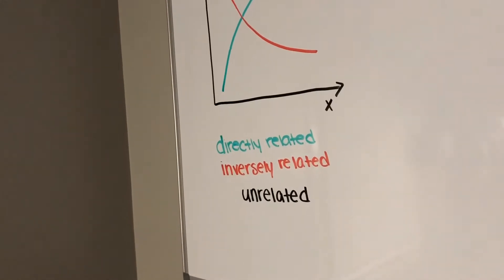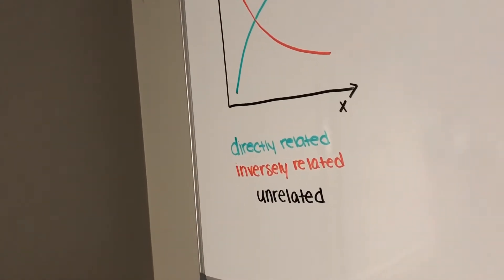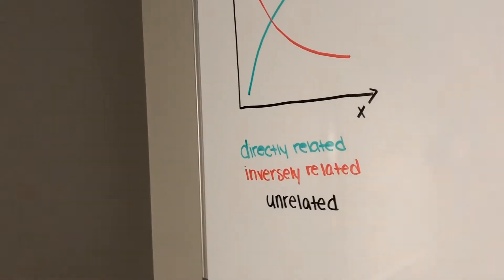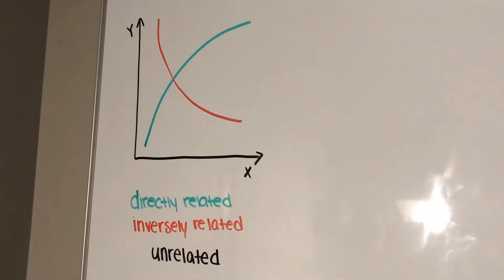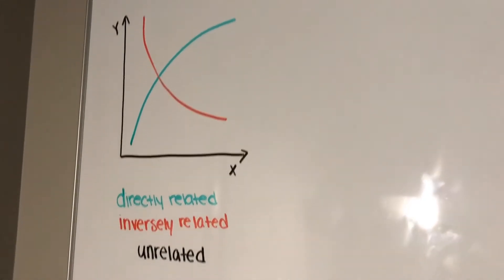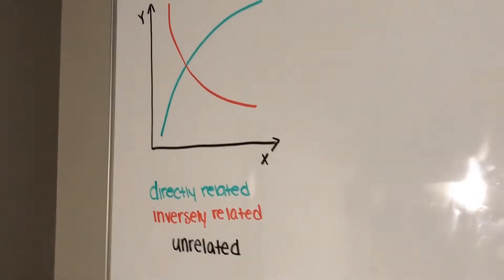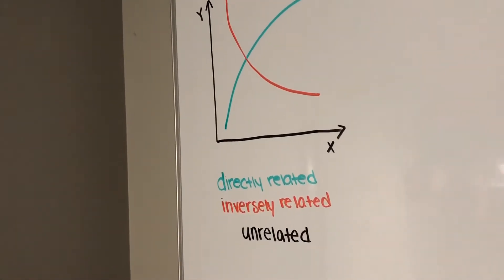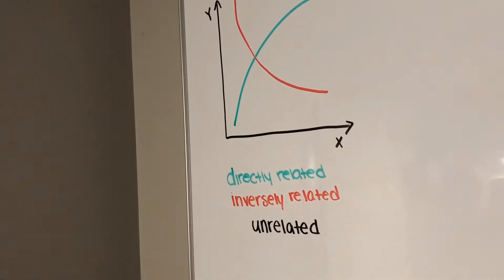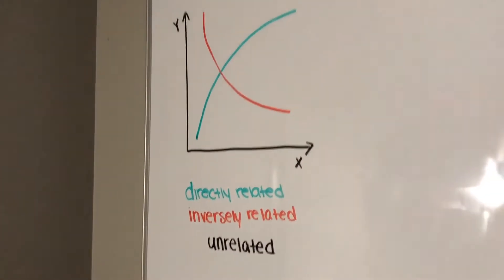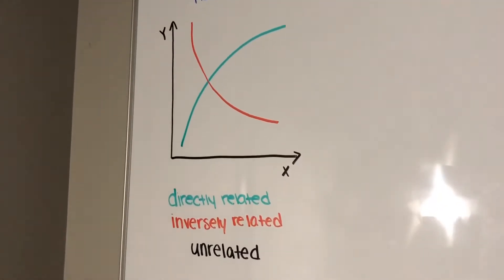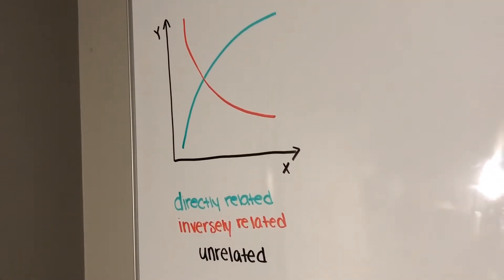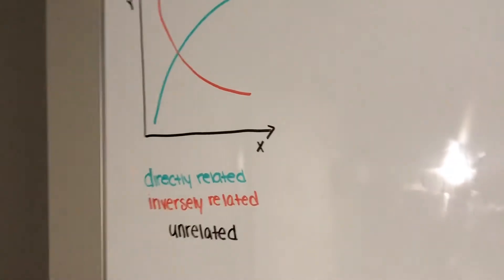An example of something that is directly related could be calorie intake and weight, because the more calories you take, the more that you will gain, and that can be represented in the green line. An example of something that is inversely related could be alcohol intake and sobriety. So the more alcohol you ingest, the less sober that you are, and that would be represented by the red line. Unrelated is simply something that has no correlation with each other, such as IQ and shoe size.